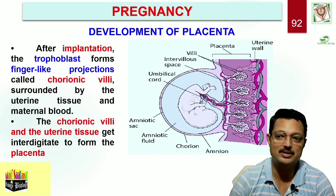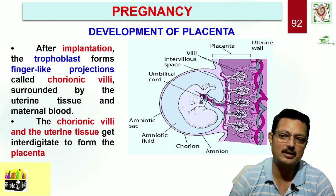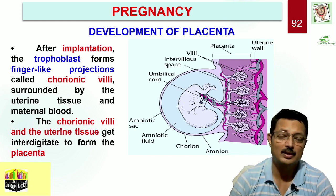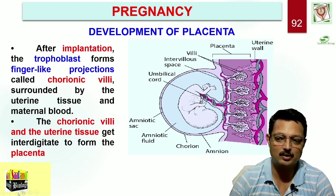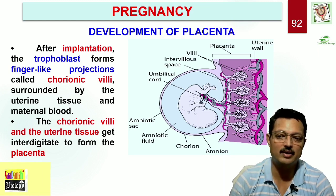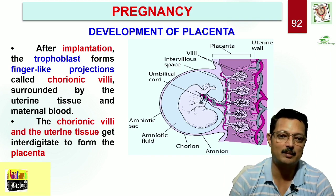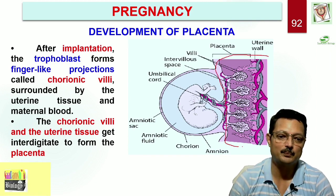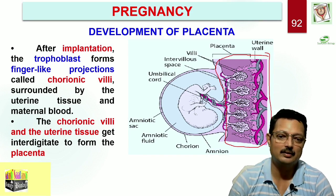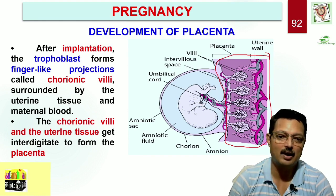The chorionic villi are surrounded by maternal tissue and maternal blood. There is interdigitation of the chorionic villi and the uterine tissue, and this forms a basal, flat, disc-like structure that we call the placenta. The developing embryo or fetus is connected to the placenta with the help of the umbilical cord.